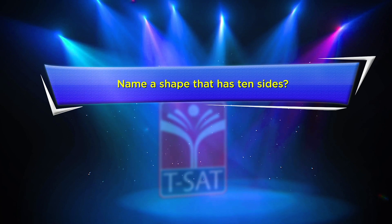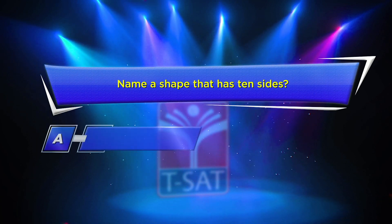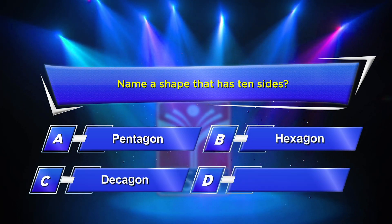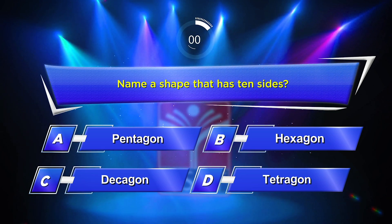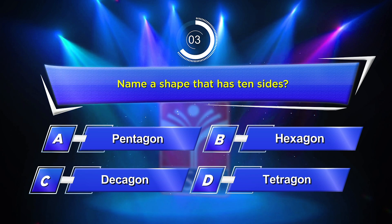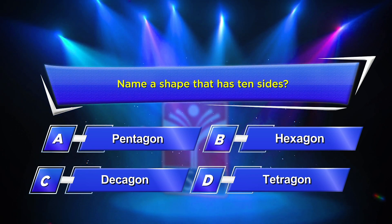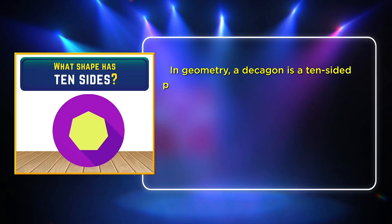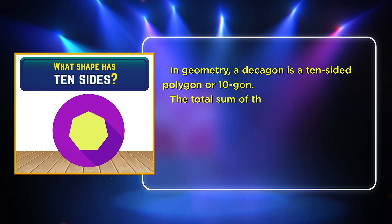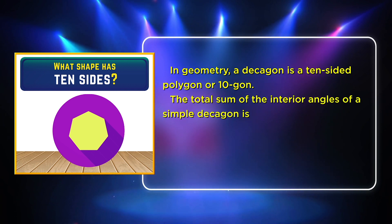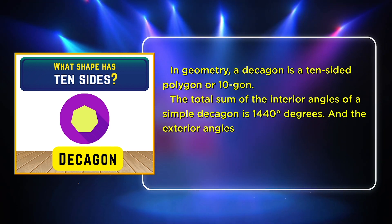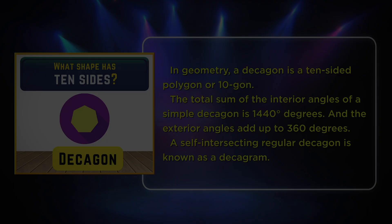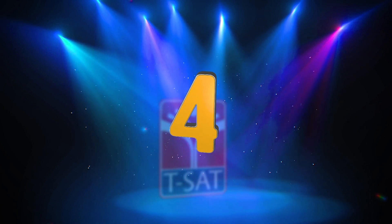Your third question is about mathematics. Name a shape that has ten sides. Option A: Pentagon. Option B: Hexagon. Option C: Decagon. Option D: Tetragon. Your time starts now. The correct answer is Option C, Decagon. In geometry, a decagon is a ten-sided polygon. The total sum of the interior angles of a simple decagon is 1440 degrees and the exterior angles add up to 360 degrees. A self-intersecting regular decagon is known as a decagram.